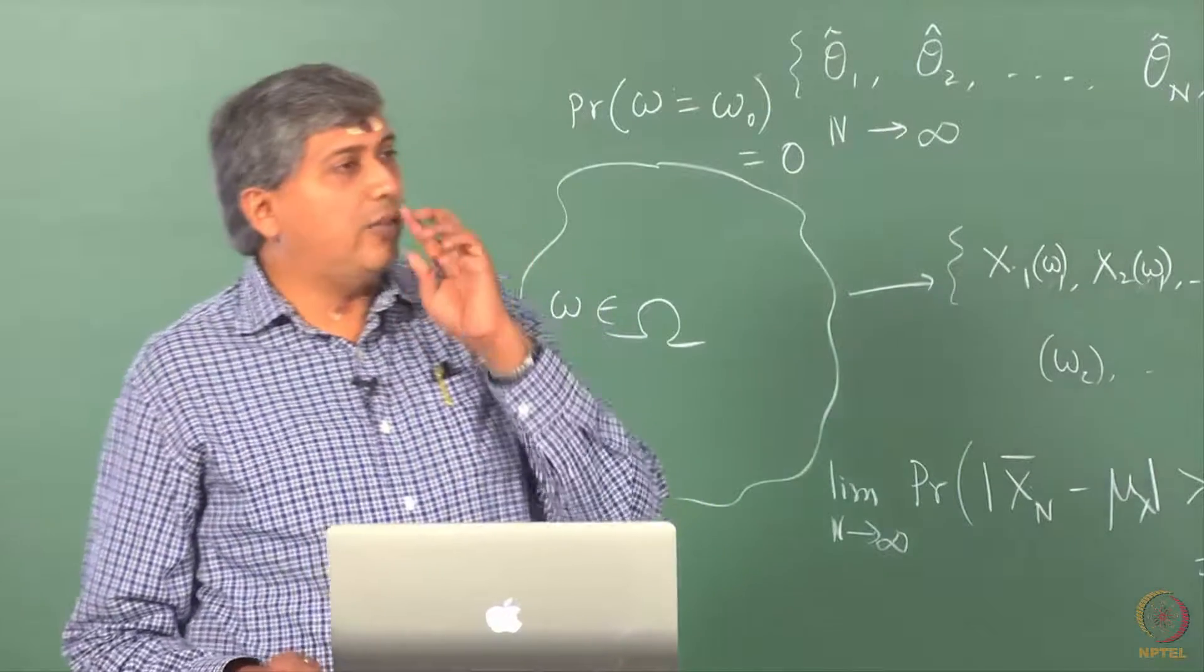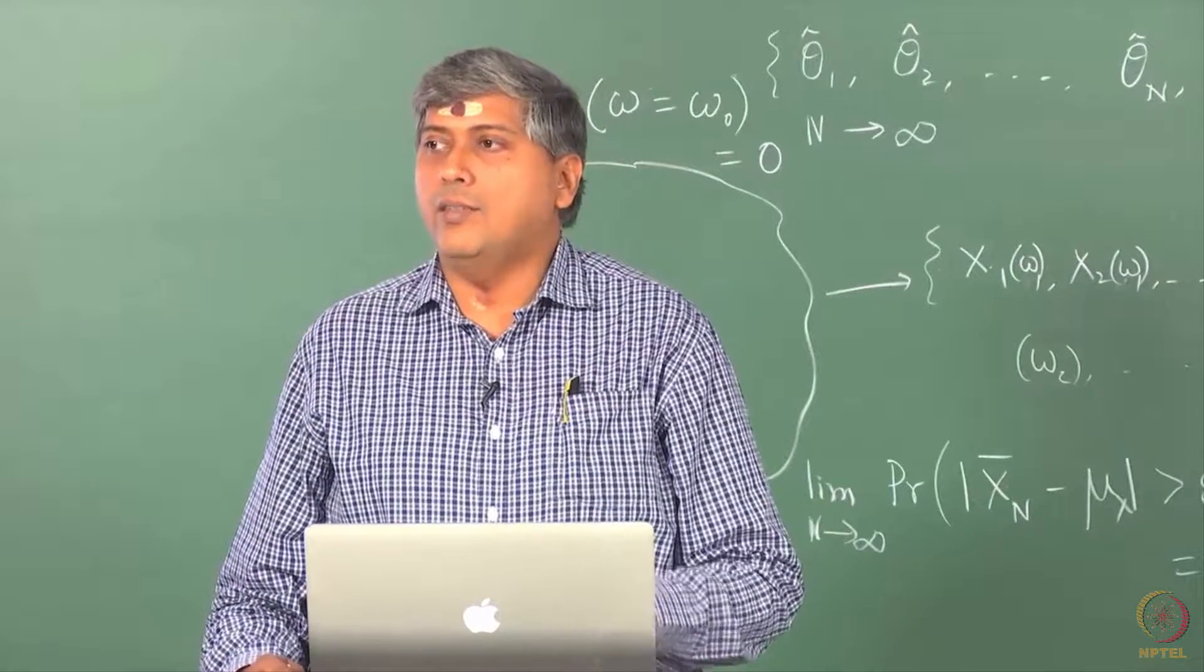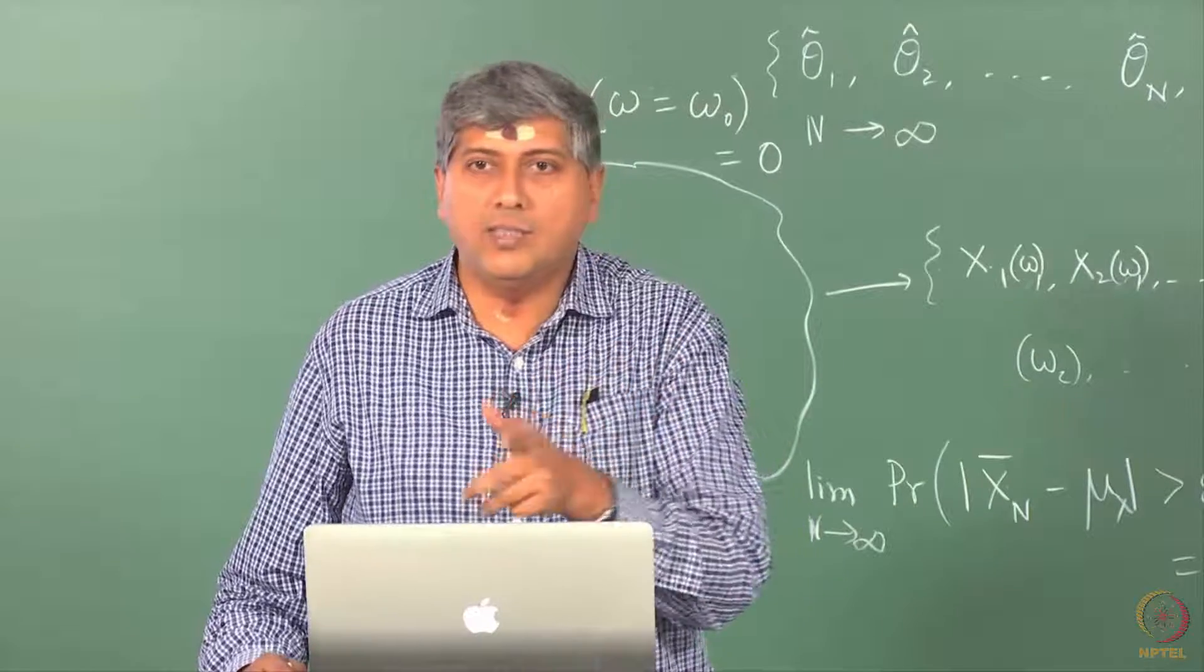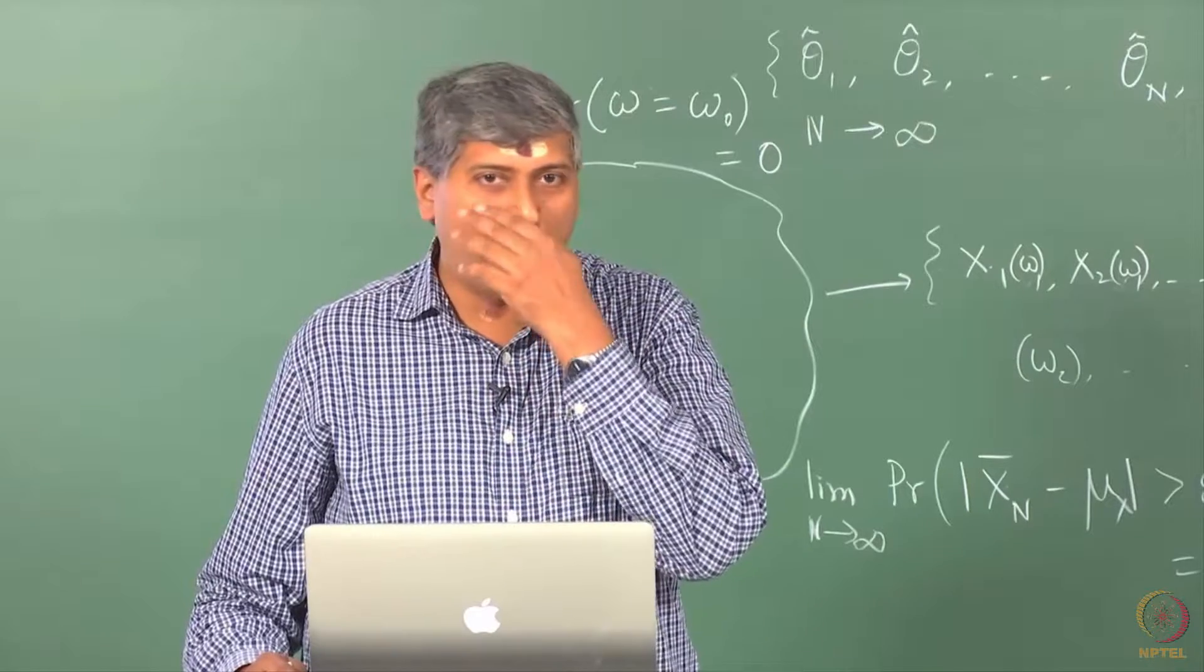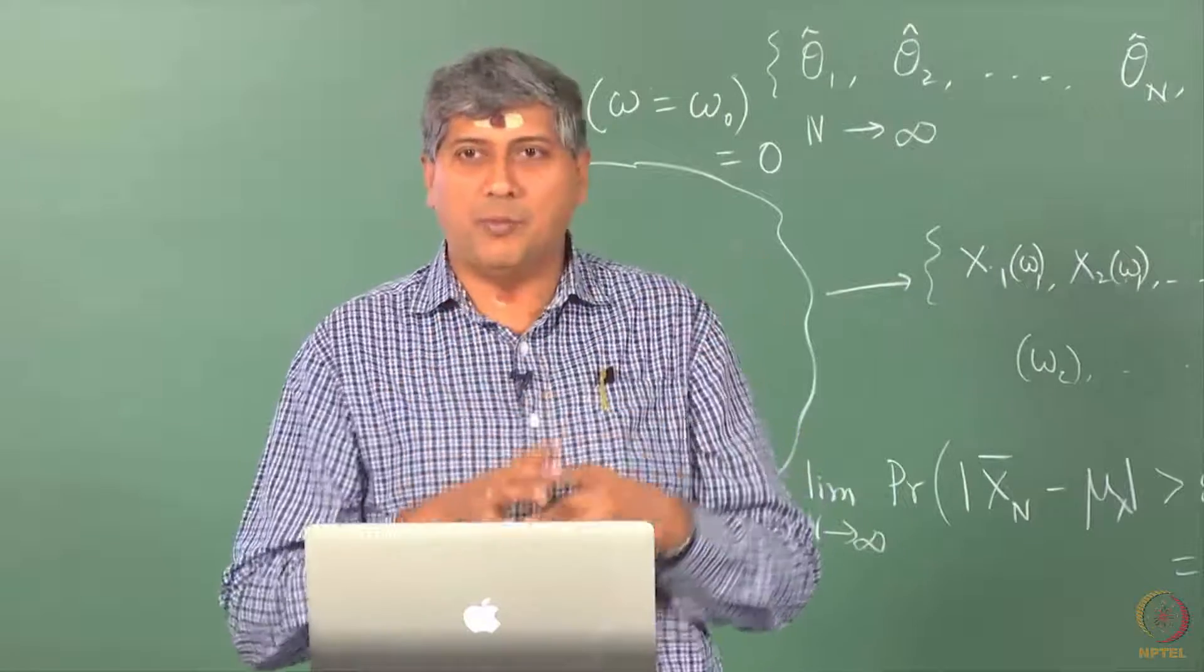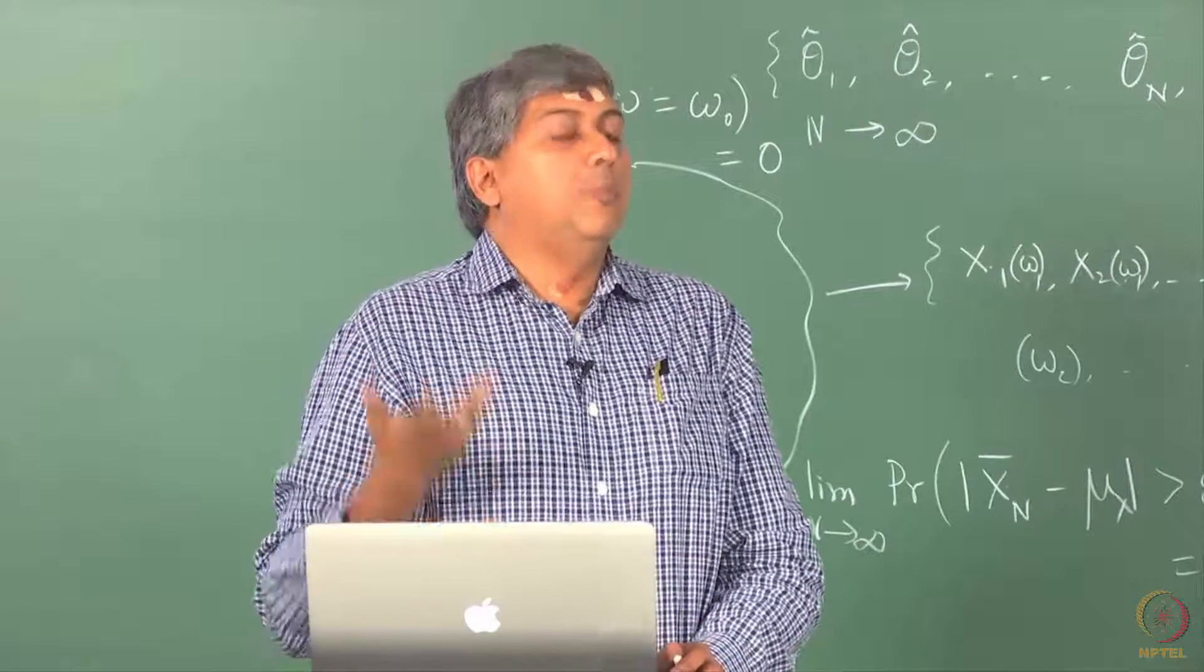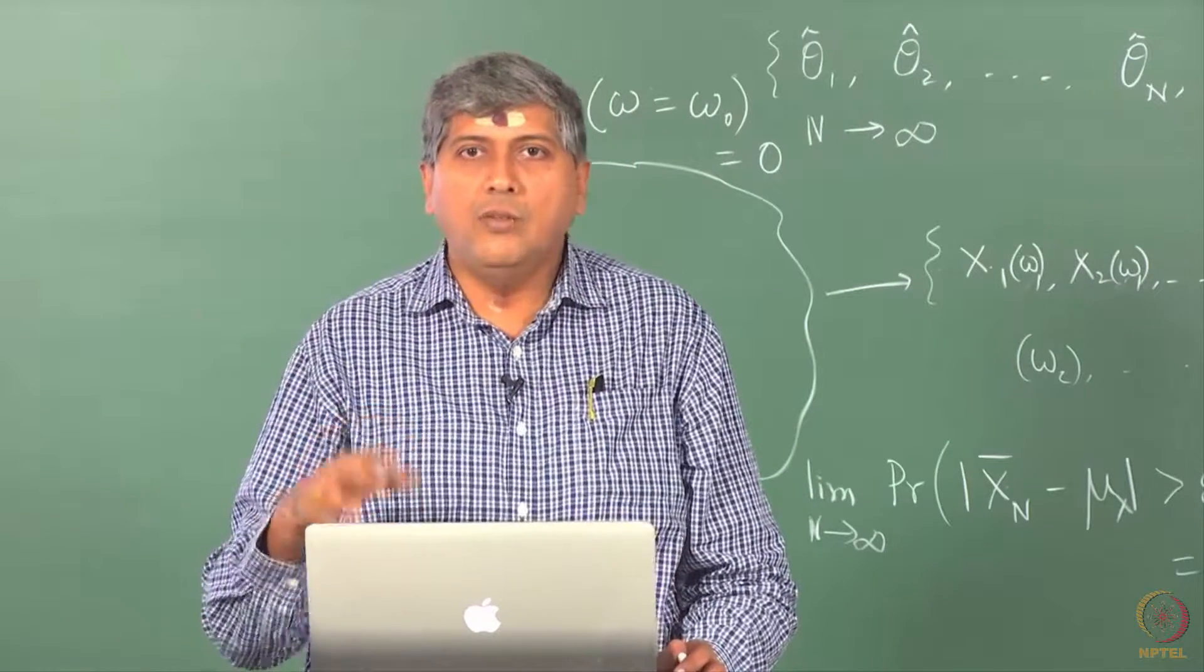Whether it is MLE or least squares or any such estimation methods, they are estimating parameters in an indirect way. They are not explicitly guaranteeing that your theta hat will go and sit at theta naught. We talked about this when we introduced estimation theory itself, right? We said that ideally we would like to pose the estimation problem such that theta hat is very close to theta naught in some sense. But we cannot pose such a problem because I do not know theta naught. Therefore, we resort to indirect means.